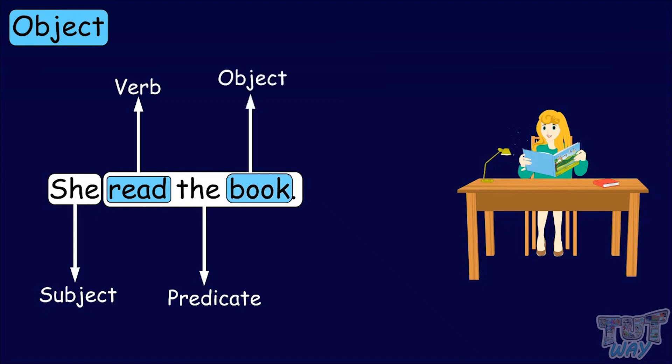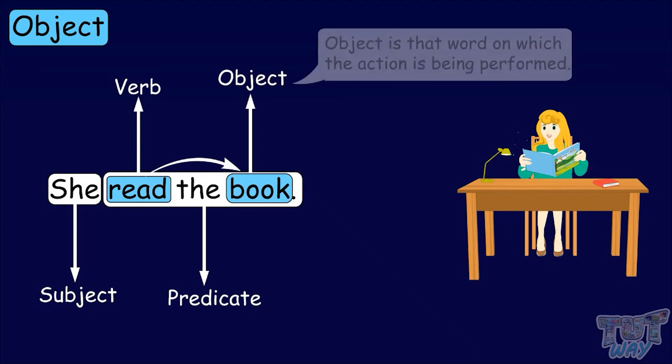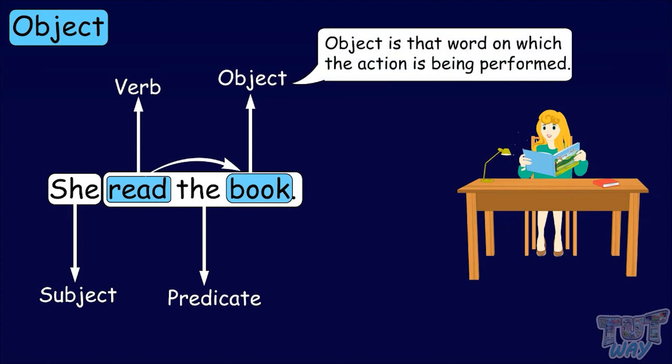That is, the action read is being performed on the book. So, object is that word on which the action is being performed. Let's have a look at another example.